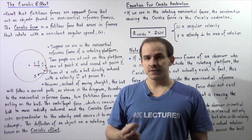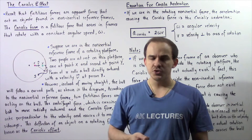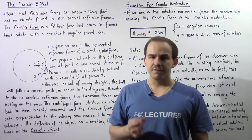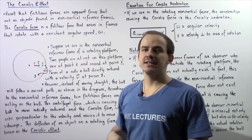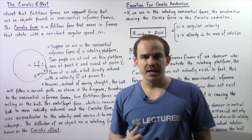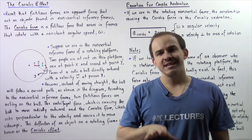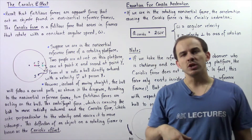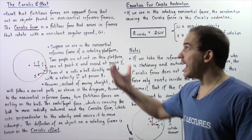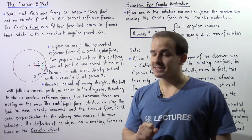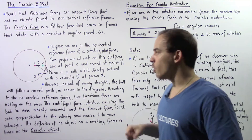The Coriolis force is a fictitious force that acts on objects which are found inside frames that are rotating with a constant angular speed given by omega. To see exactly what the Coriolis force is and how it creates the Coriolis effect, let's consider the following diagram.